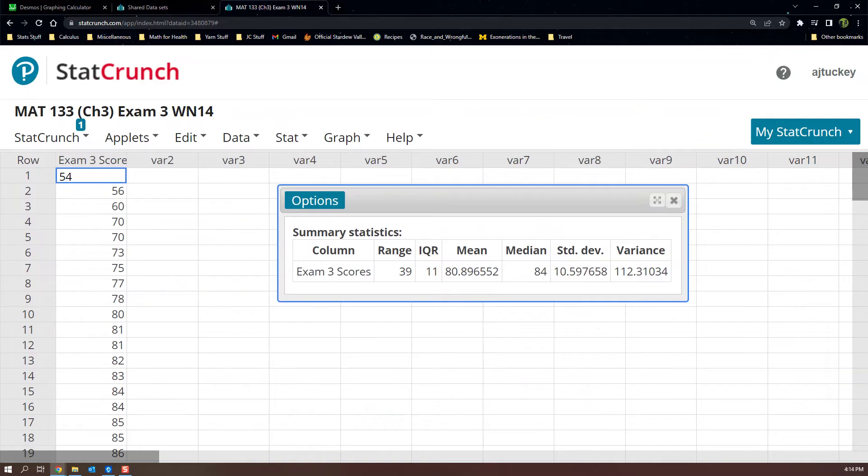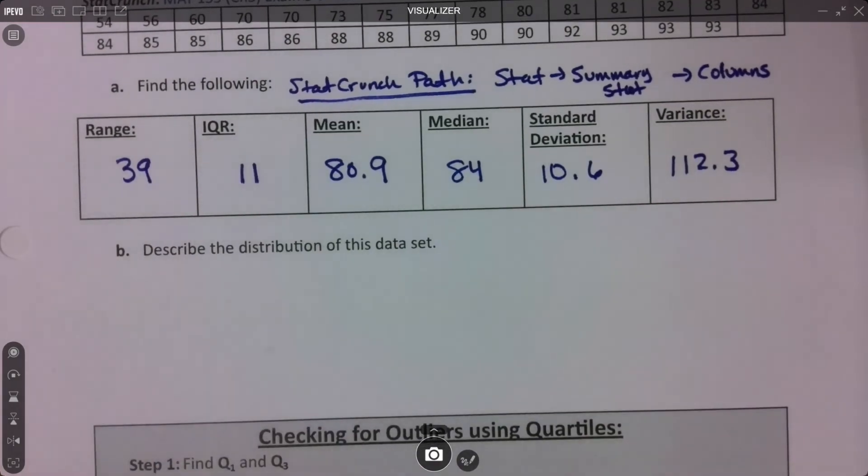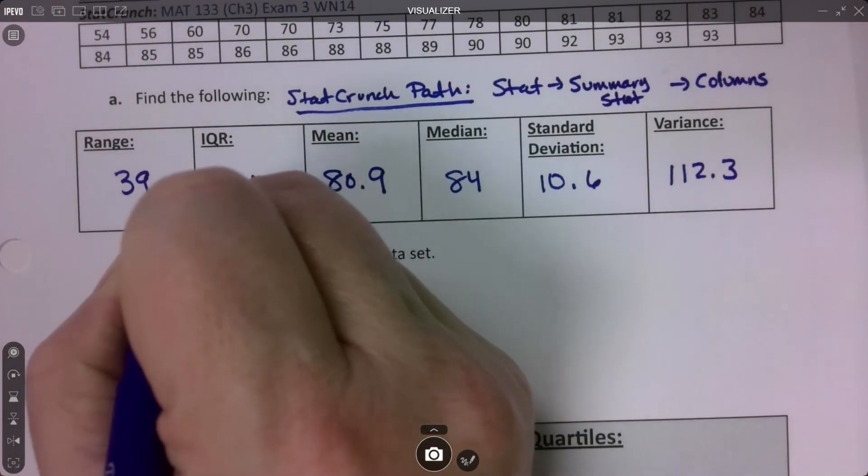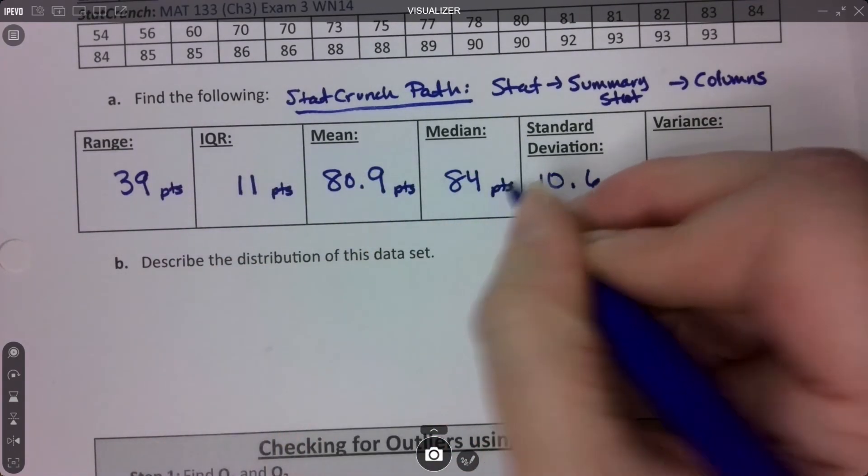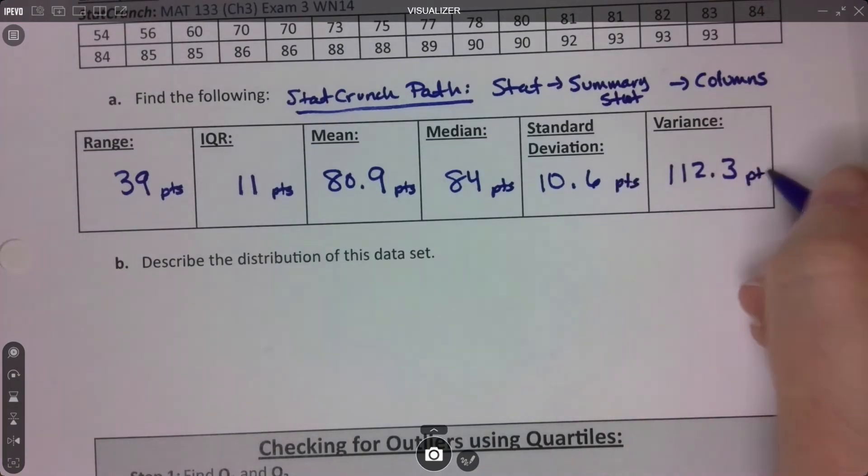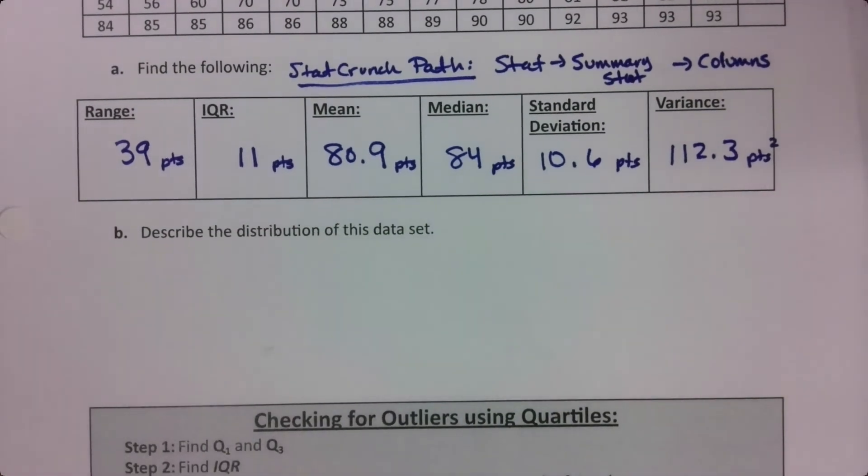39, 11, the mean is 80 point, let's think, they probably want one decimal place. So I'll do 80.9. The median is 84. The standard deviation is 10.6. And the variance is 112.3. That's the variance. I was just writing them all down on my sheet. There they are. Now these are probably, they need units. So it's probably points. So you could put points on all of them. Sometimes it's inches. Sometimes it's dollars. This one's points. And of course, the last one's points squared, which is pointless. Get it? Pointless. But, you know, what are you going to do?